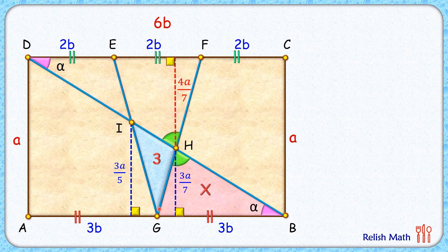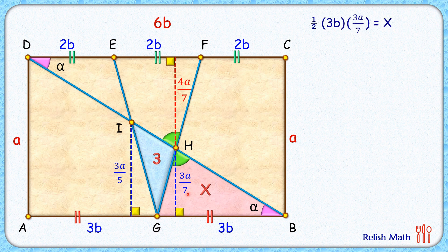Let's assume the area of triangle HGB is x square centimeters. The area equals half of base times height, where the base is 3b and height is 3a/7. Simplifying: area = (1/2) × 3b × 3a/7 = 9ab/14. So x = 9ab/14.